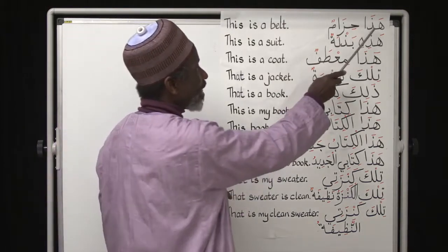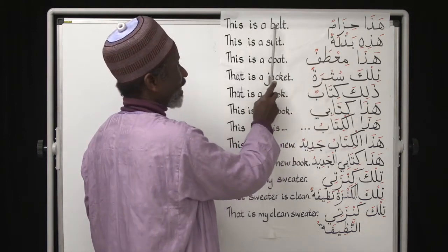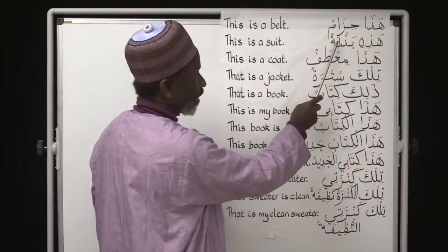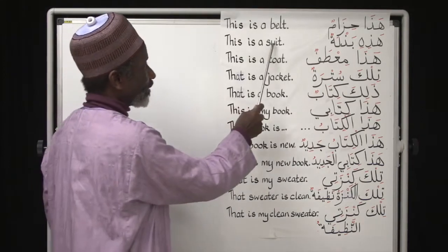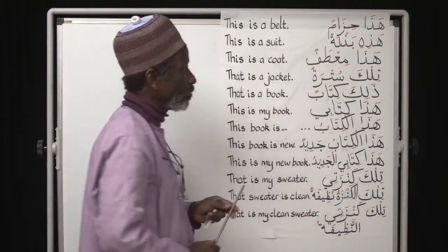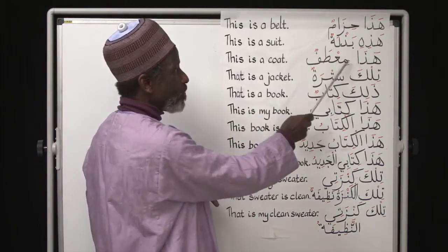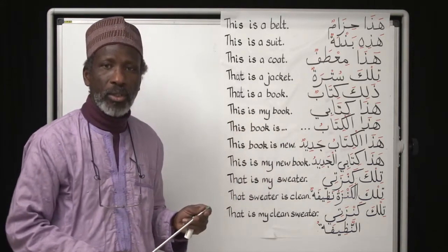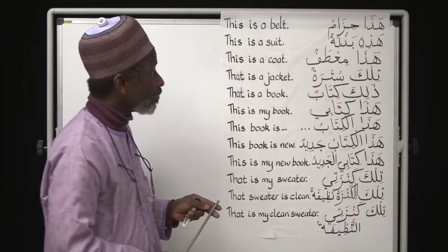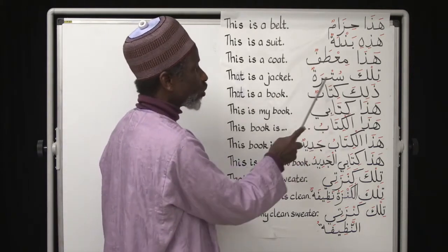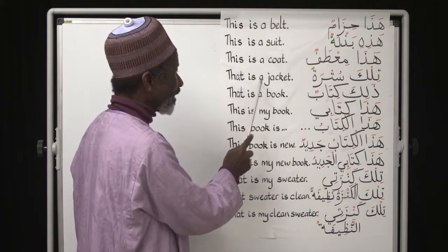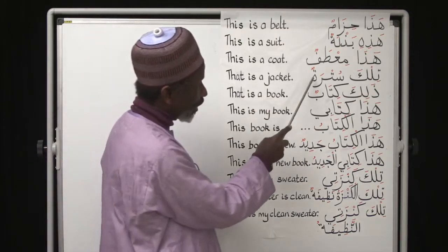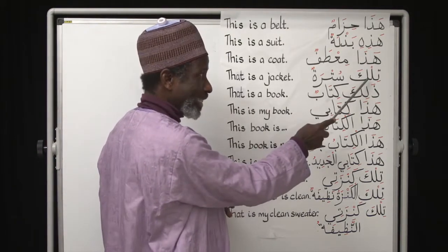Hādhā hizāmun — this is a belt. Hādhihi badlatu — this is a suit. Hādhihi mi'ṭafun — this is a coat. Tilka sutratun — that is a jacket. You can see that 'sutratun' is feminine, which is why we are using tilka.